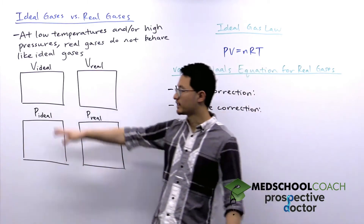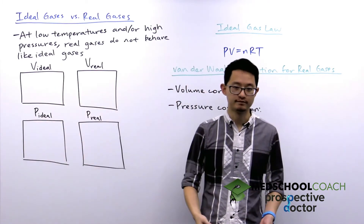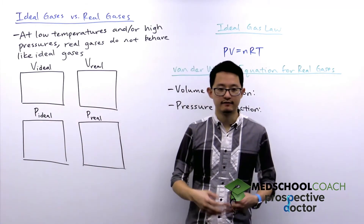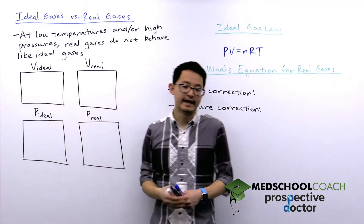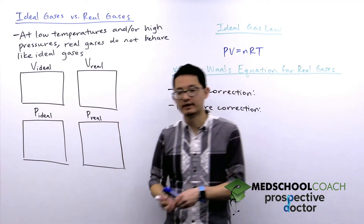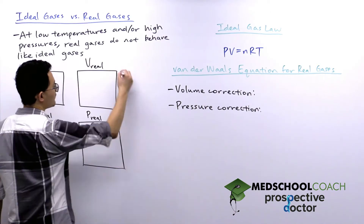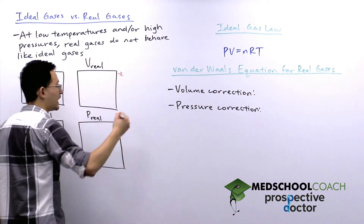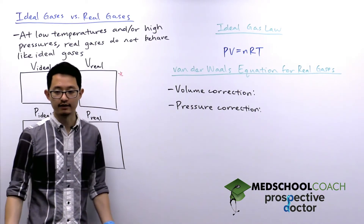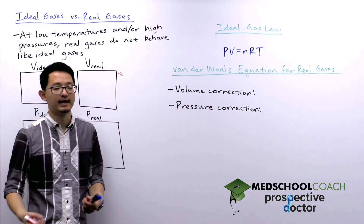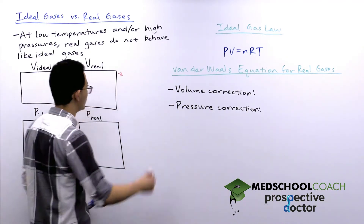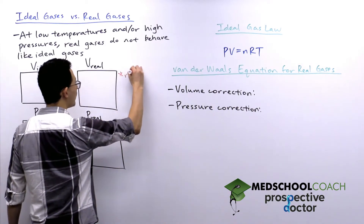To look at the differences between ideal gases and real gases, we need to examine the volume and pressure of each. For ideal gases, the volume is simply the volume of the container. However, one of the key assumptions of ideal gases is that ideal gas particles have negligible volume compared to the volume of the container — we essentially say ideal gas particles don't occupy any volume. But that's not true; real gas particles do occupy volume.